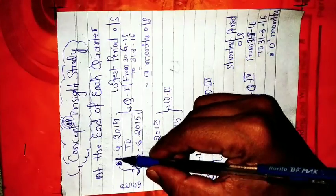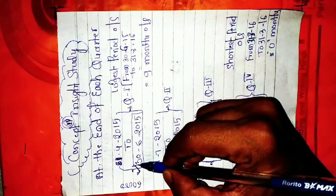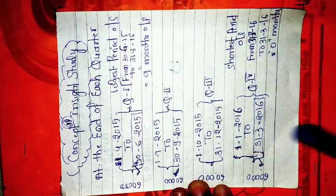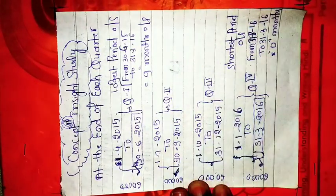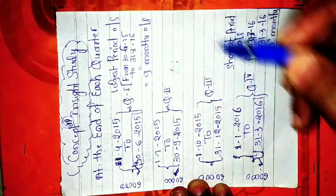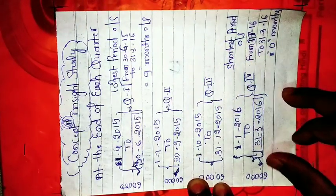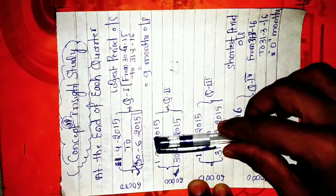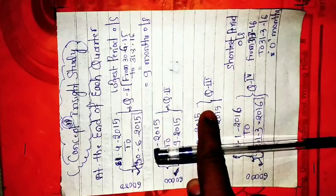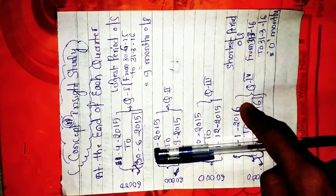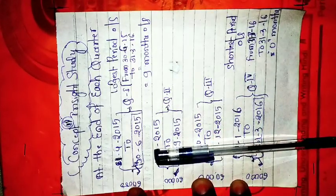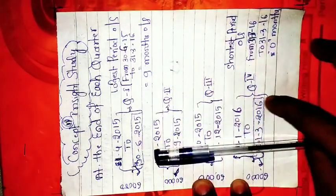In the first quarter, the first date of drawing was made on 30th June 2015. The amount was sixty thousand. From 30th June 2015 to 31st March 2016 — the year ending — how many months are there? Three months in this quarter, three months in this quarter, three months in this quarter — so total nine months. So it means the sixty thousand was used for nine months. This is the longest period outstanding.